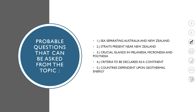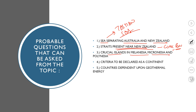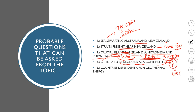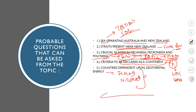To end the session, let us see the list of probable questions. First, the sea separating Australia and New Zealand — it is the Tasman Sea. Second, the straits present near New Zealand — Cook Strait and Fovex Strait. Third, crucial islands in Melanesia, Micronesia, and Polynesia — sets of islands in the Pacific Ocean — please refer to the Pacific Ocean mapping video for the same. Fourth, criteria to be declared as a continent — we have seen four criteria, which can be asked in UPSC prelims 2020. And lastly, countries dependent upon geothermal energy — Iceland and New Zealand. Thanks a lot.